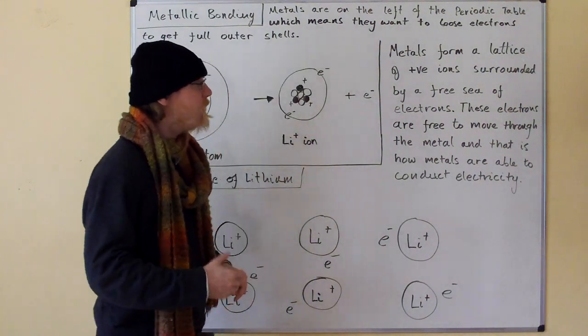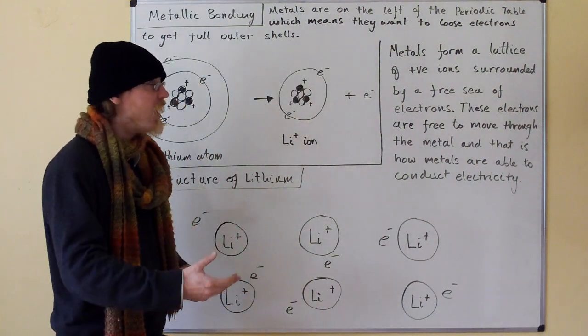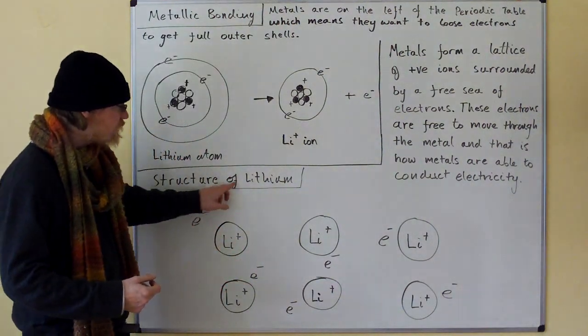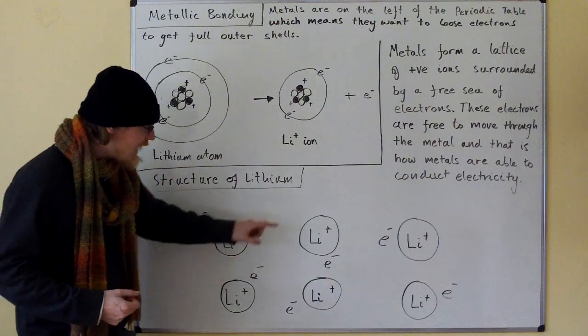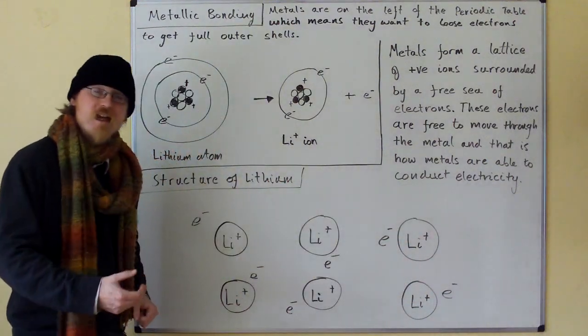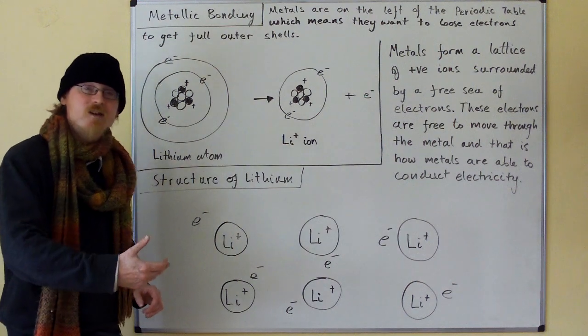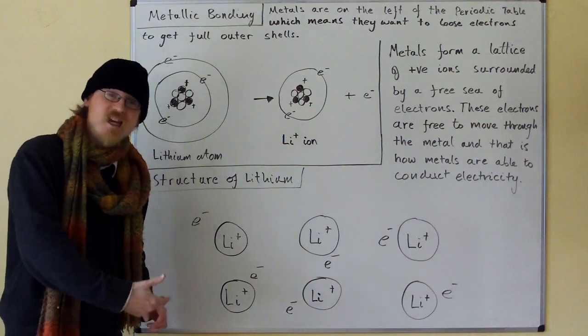So metals form a lattice of positive ions surrounded by a free sea of electrons. Here we have the structure of lithium. It's a lattice, a regular arrangement of lithium ions surrounded by a random and freely moving sea of electrons.